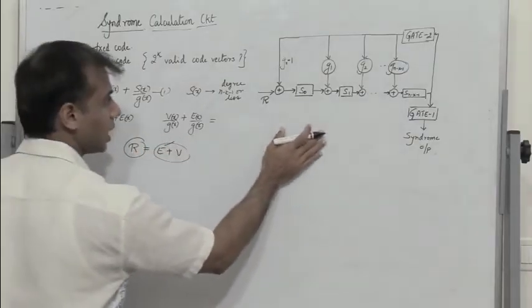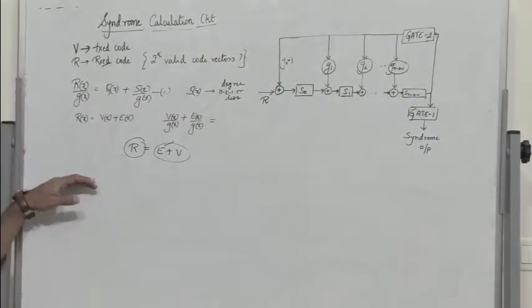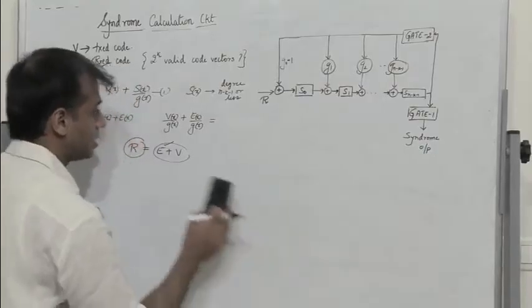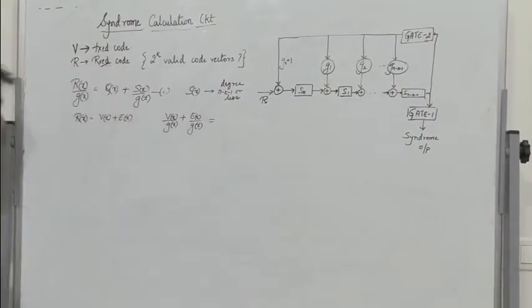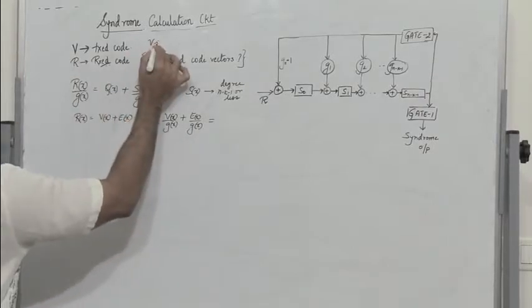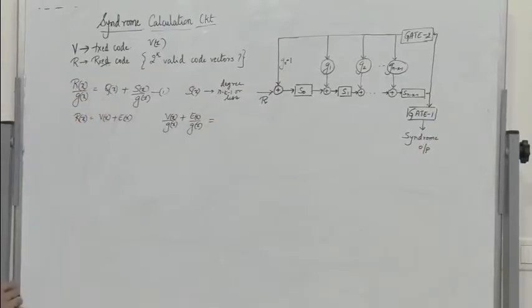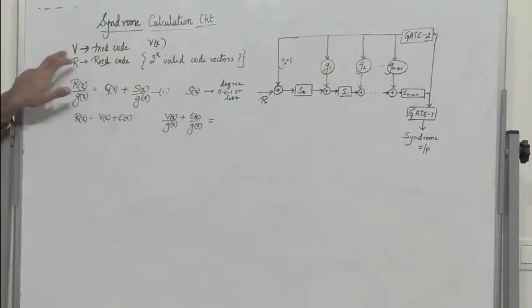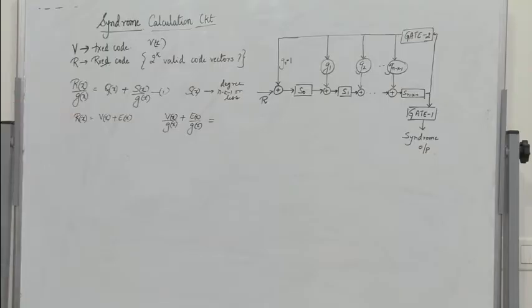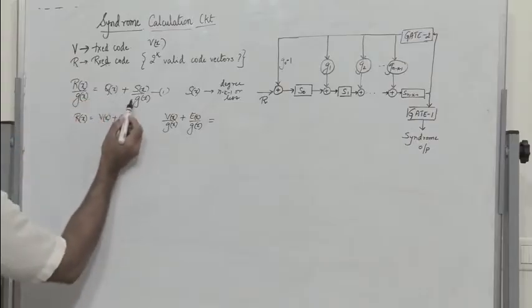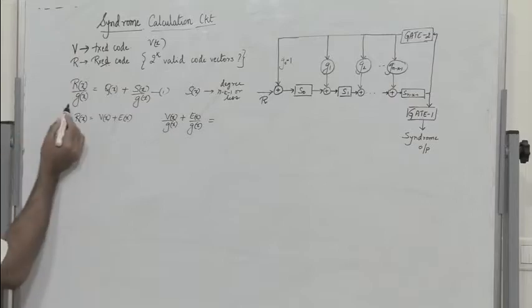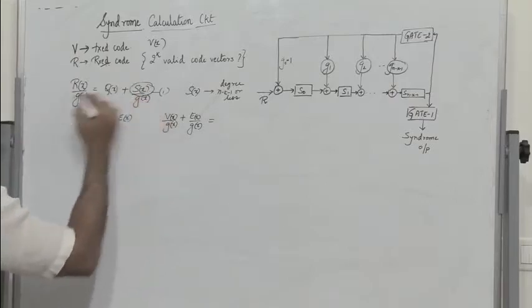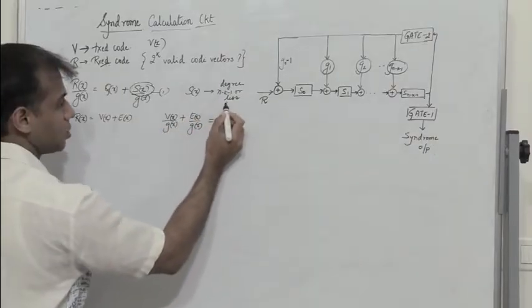We need to design a syndrome calculation circuit to identify a single-bit error and also correct it. Let V(X) be the transmitted code and R(X) be the received code. R(X) is divided by G(X), giving quotient polynomial Q(X) plus S(X) by G(X). G(X) is the generator polynomial and S(X) is the syndrome polynomial, which is of degree N minus K minus 1 or less.